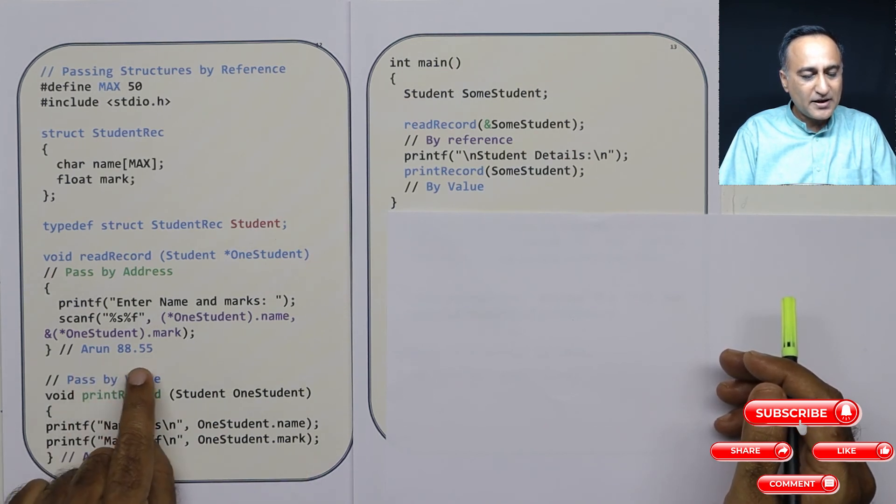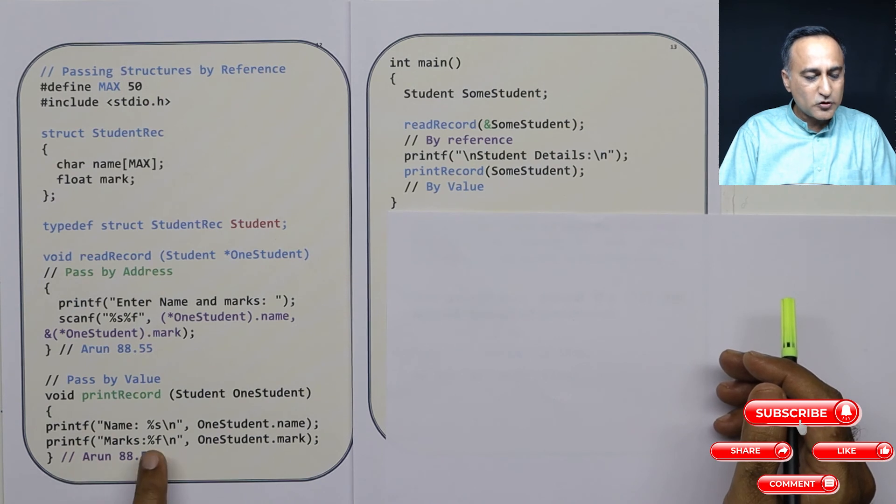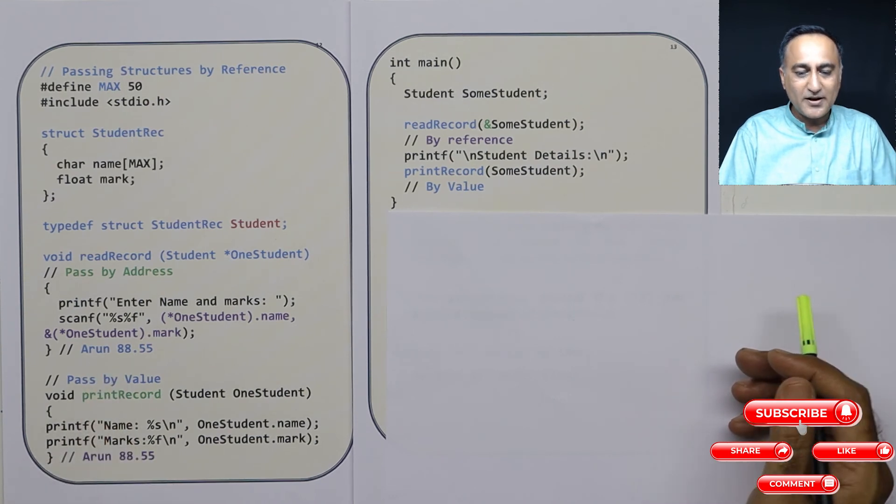Assuming I had entered Arun and 88.55. Here also assuming this data, you would have got the result Arun and 88.5.